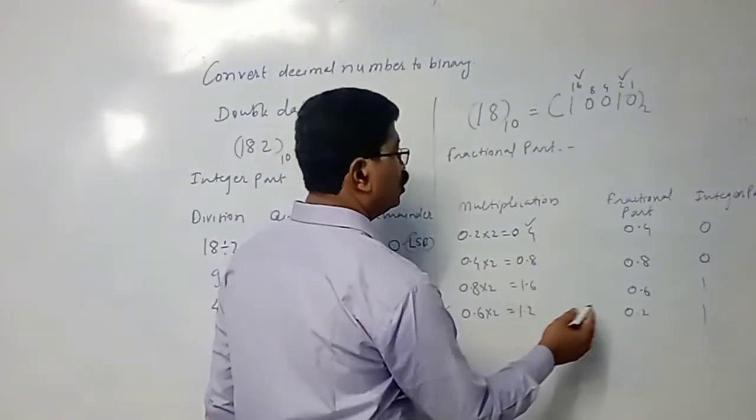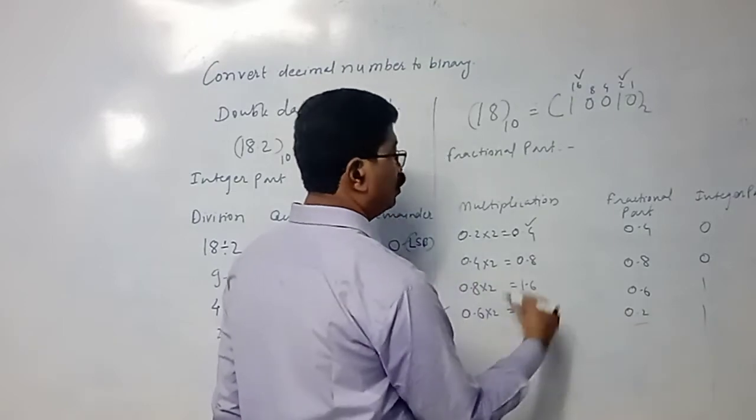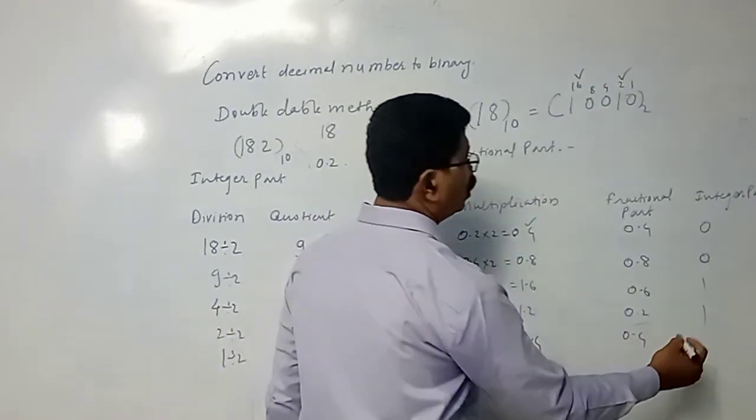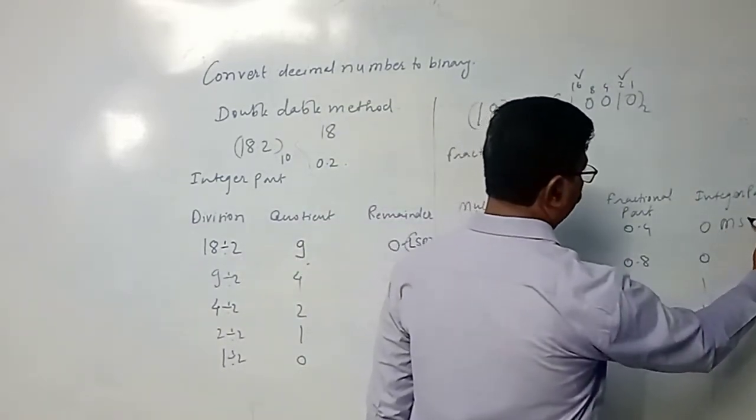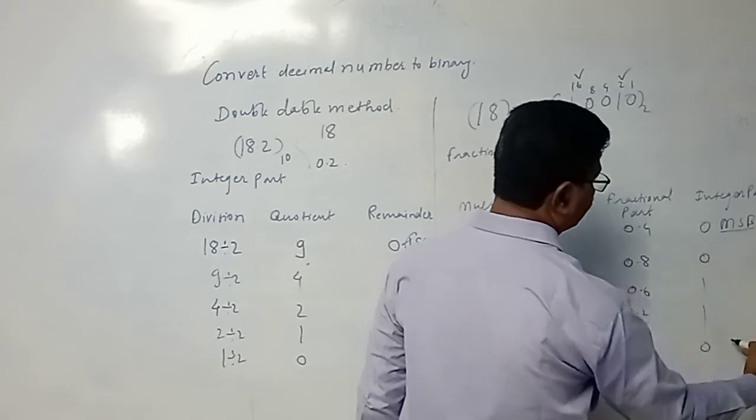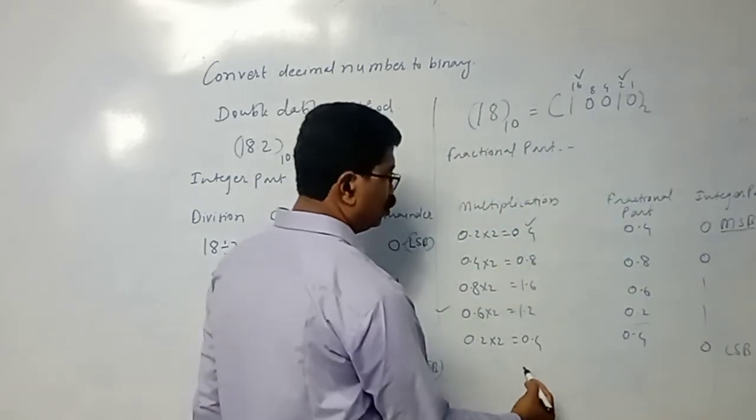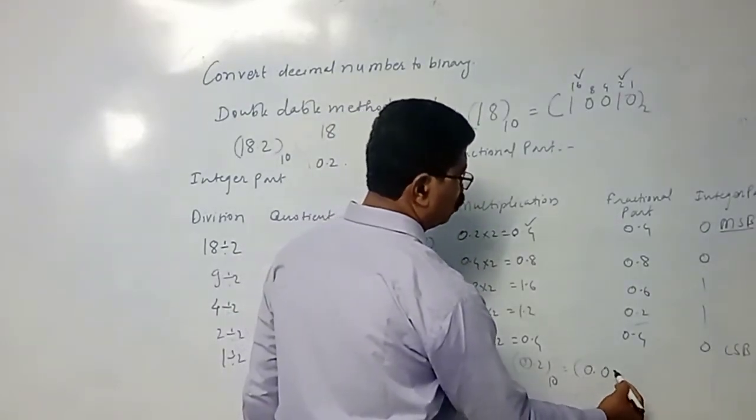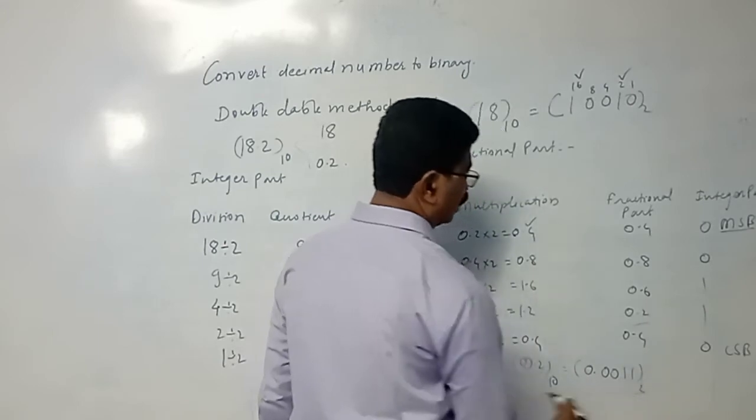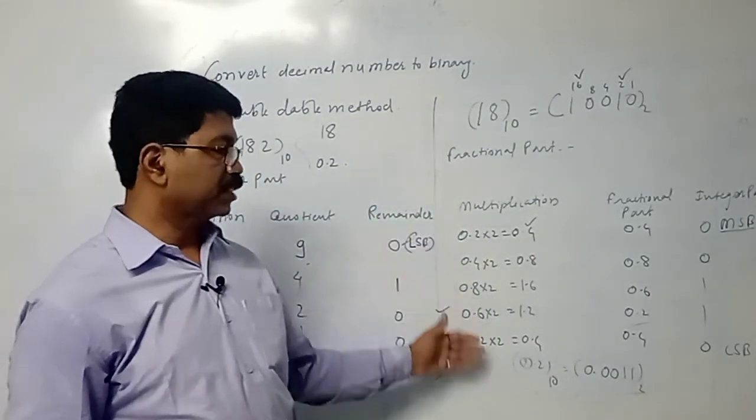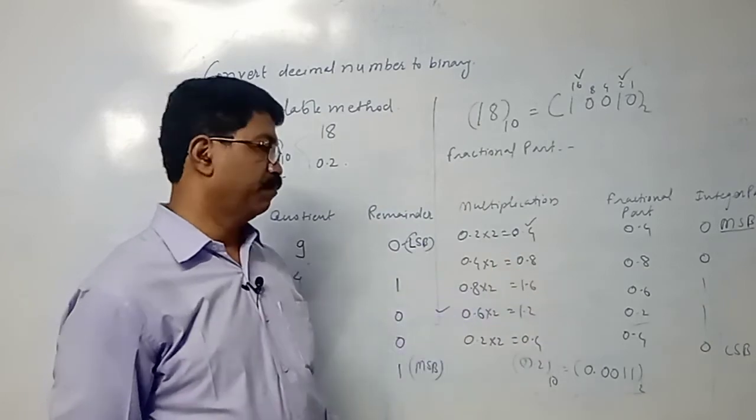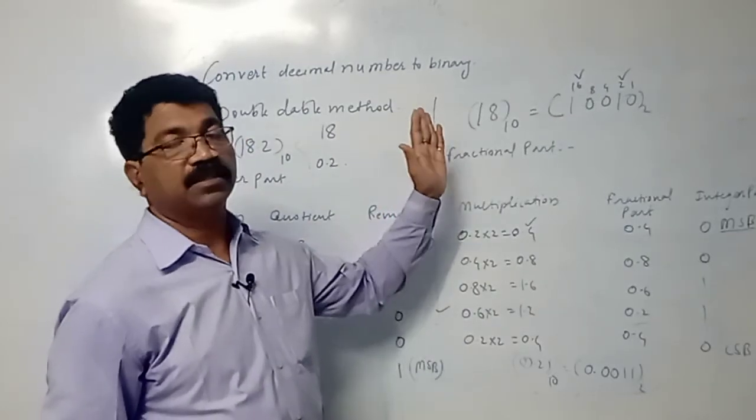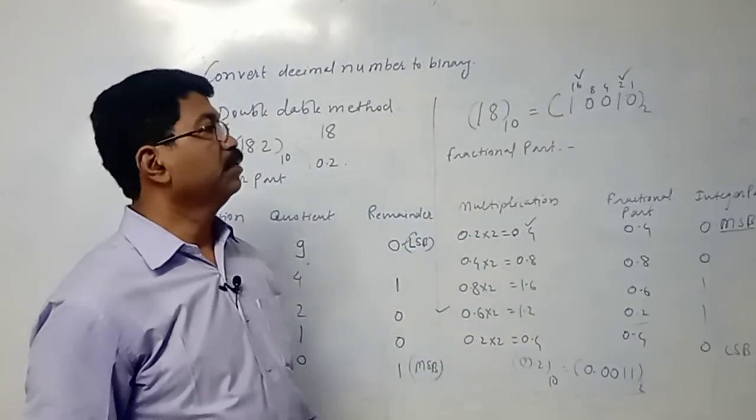You have to multiply 0.2 by 2, that is 0.4. Here the first integer part is MSB, the last will be LSB. So 0.2 in decimal will be written as 0.0011 in binary. So this is how you convert the fractional part and the integer part of a decimal number into binary.